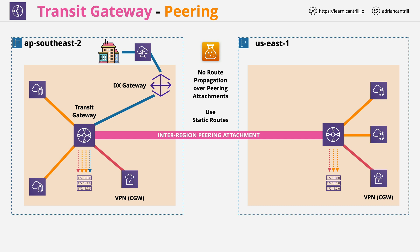AWS is also hinting that there will be future enhancements, and they recommend that when configuring a Transit Gateway you use a unique ASN to allow for these future enhancements. I've learned to take AWS advice when things are framed this way. If you're configuring any Transit Gateways, make sure you configure them with unique ASNs. I expect that at some point route advertisements will work over Transit Gateway peering, so using unique ASNs will minimise any future issues.